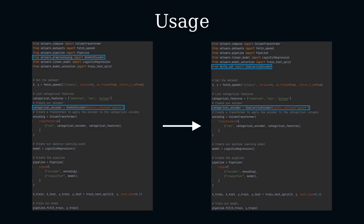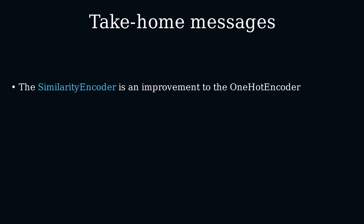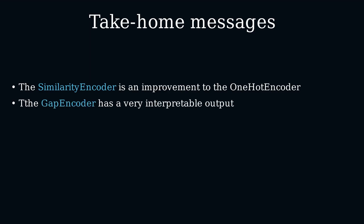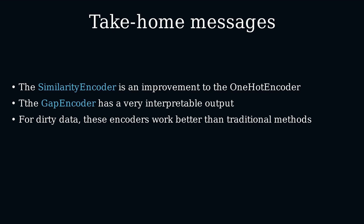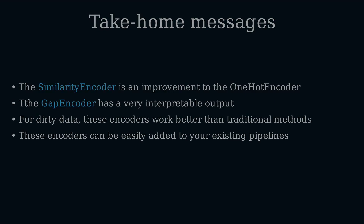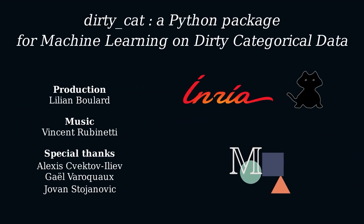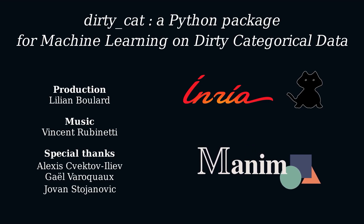The best part is that from a code perspective, these encoders are literally drop-in replacements, so they can be easily added to most codebases without major changes. To summarize: the similarity encoder is an improvement to the one-hot encoder; the Gap encoder has a very interpretable output; for dirty data, these encoders work better than traditional methods; and you can easily add them to your existing pipelines. DirtyCat also implements a few other methods with their own advantages — you can review their principles and code on the official DirtyCat website. Thank you!